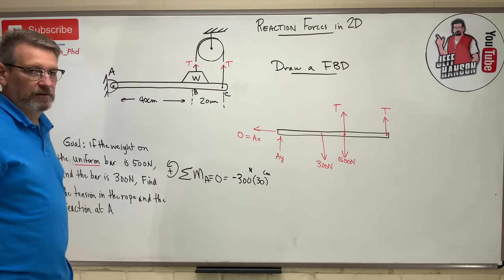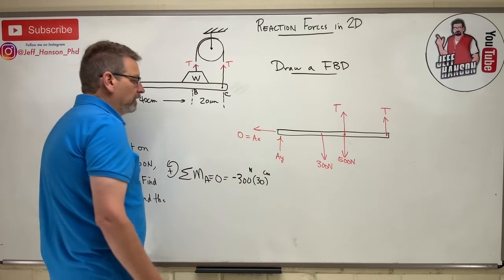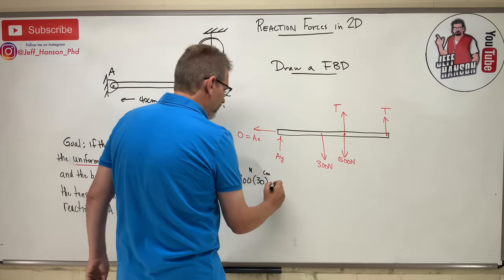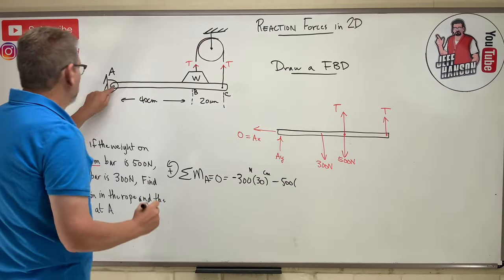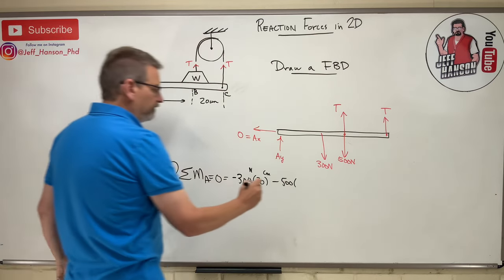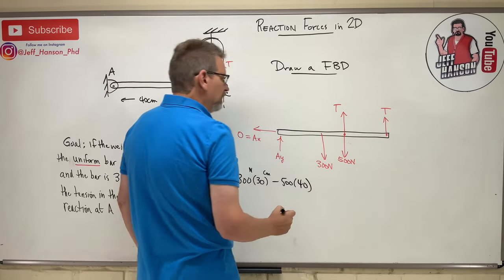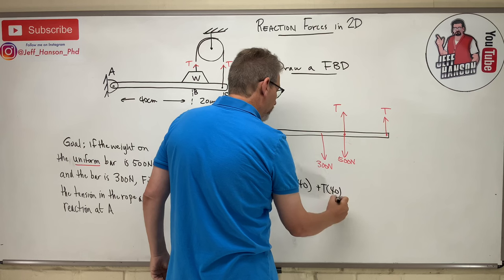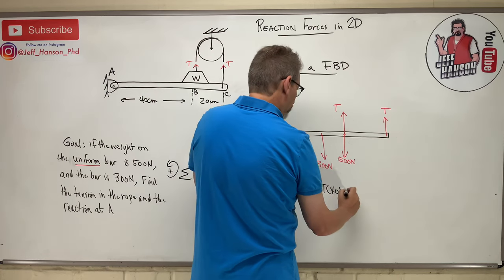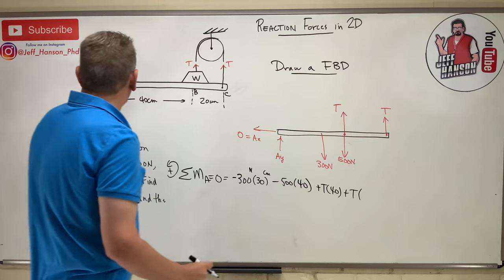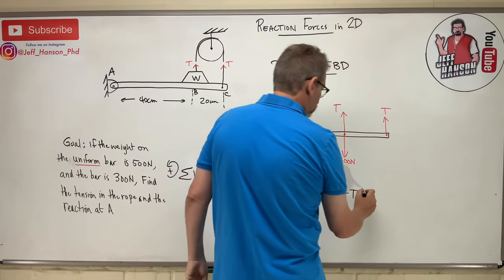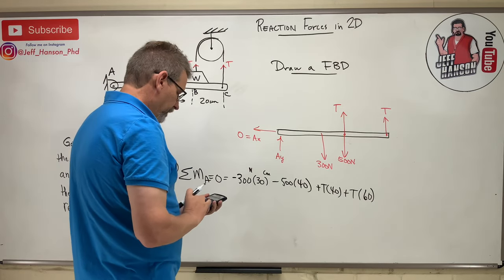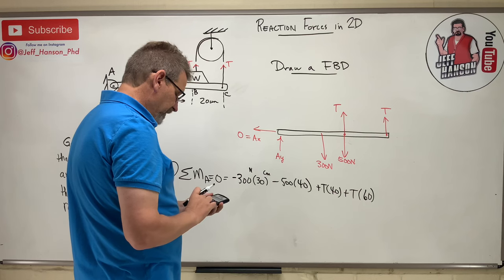So I'm going to get my moment is going to be in Newton centimeters here. And then what? The 500, which also rotates me clockwise, negative 500 times how far away to the 500 is 40 centimeters. And then this T which rotates me positive, so plus T times 40. And then there's another T over there, also positive, plus T times 60.